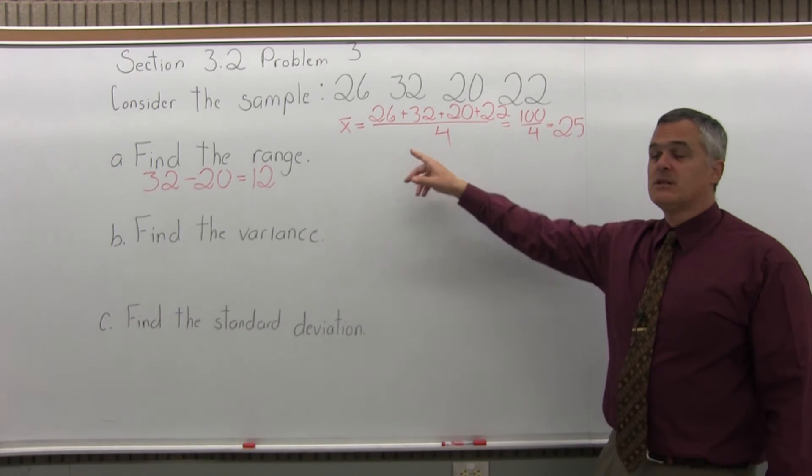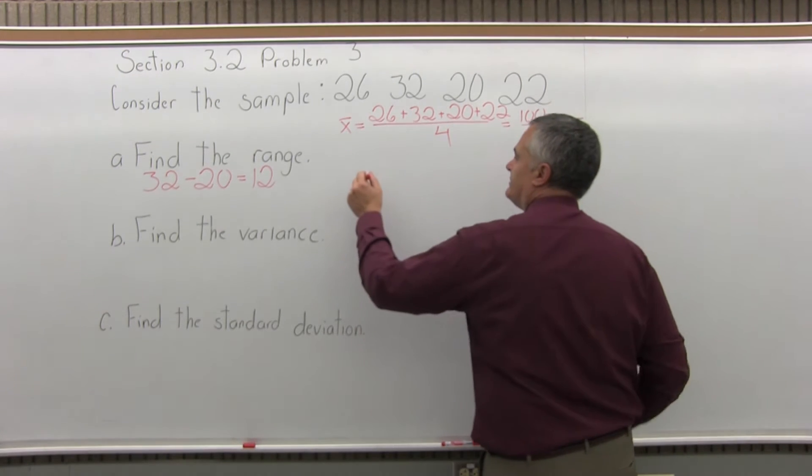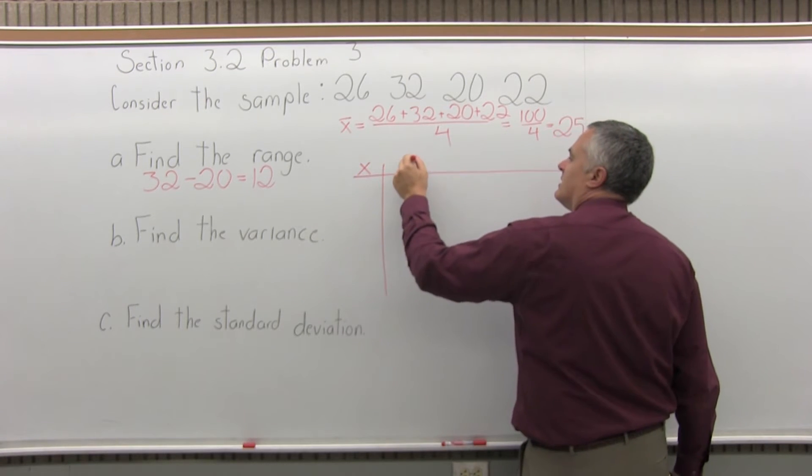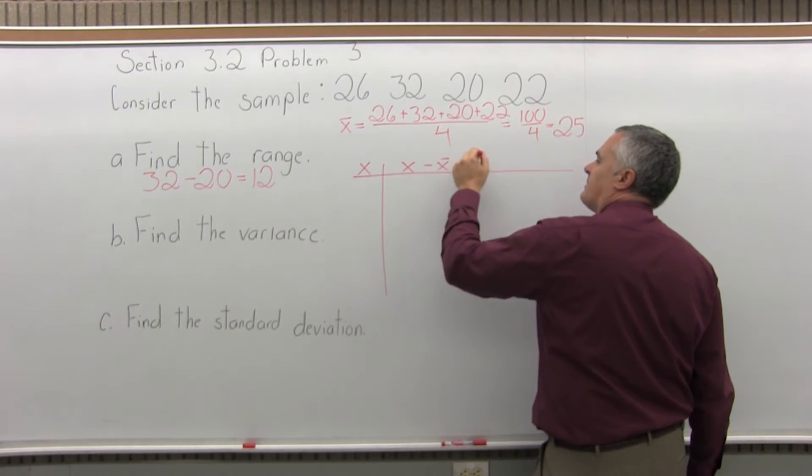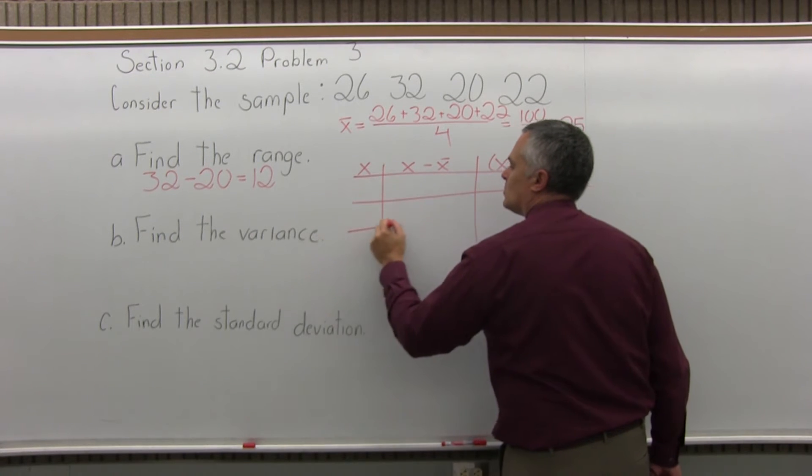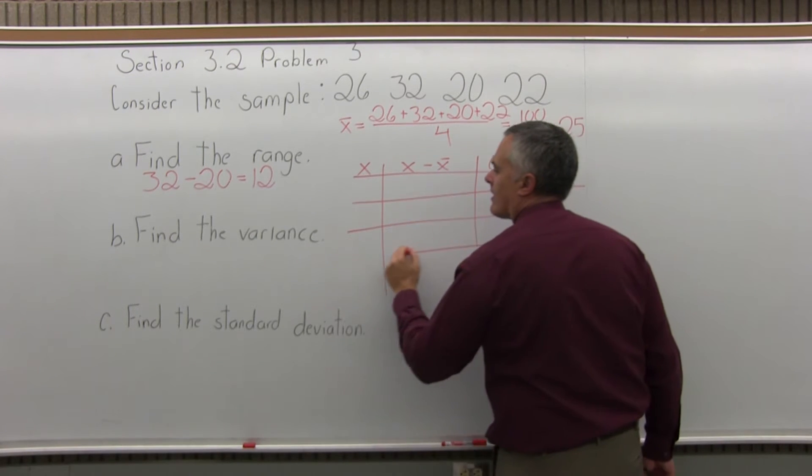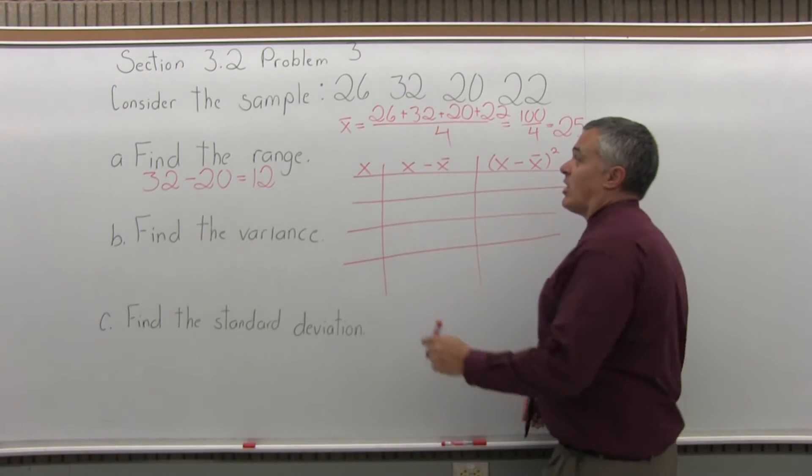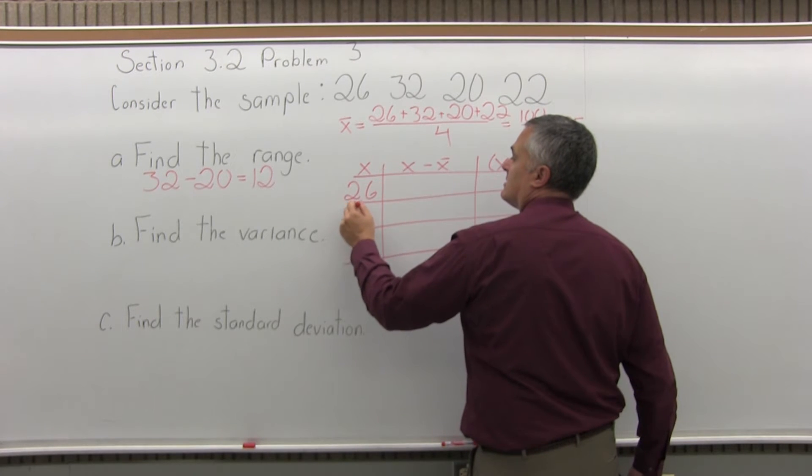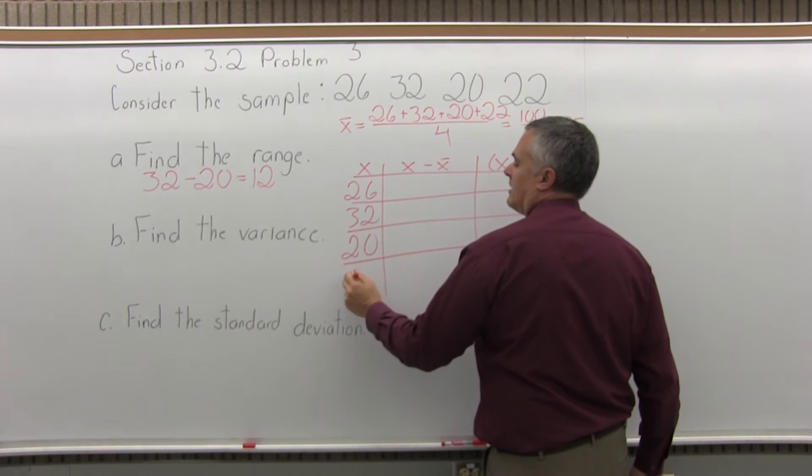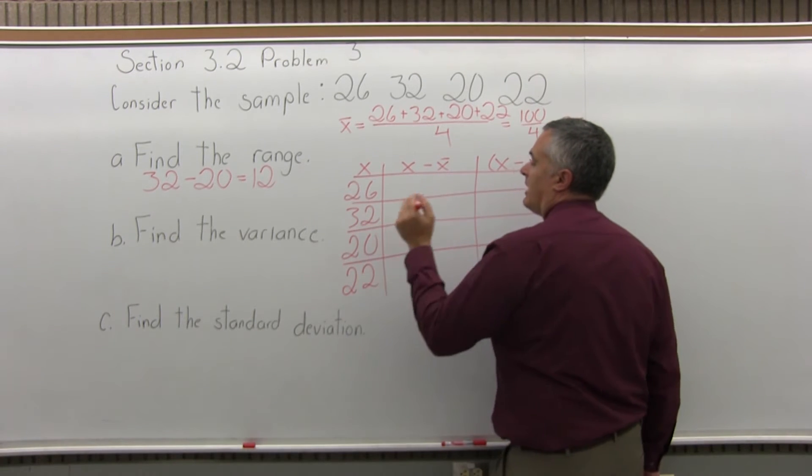Step two is fill out the chart. The chart has three columns. The first column is X, the middle column is X minus X bar, and the last column is X minus X bar in parentheses to the second power. So the X column, you simply fill in with the data that's given to you in the problem. So for this problem, that would be 26, 32, 20, and 22.